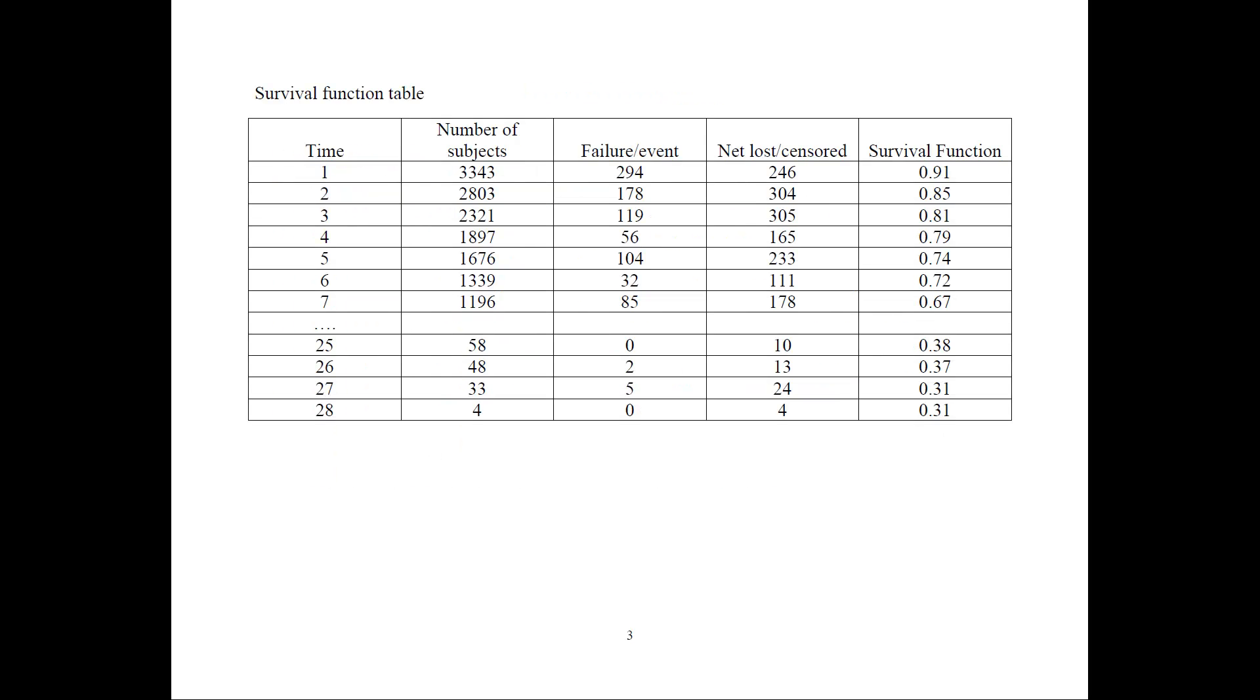So let's look at the survival function table. Here, all the observations that we have are lined up from the first time period to the last time period, and we have 28 time periods in the sample. We are starting with the full sample of 3,343 observations.